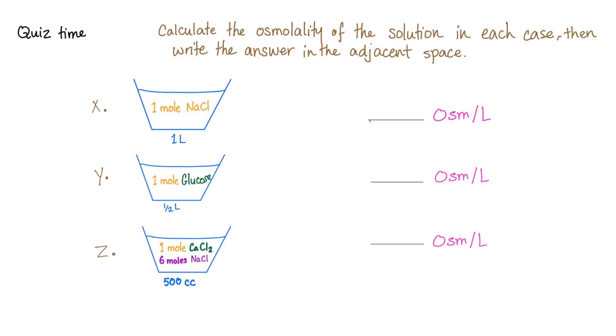The second question. Calculate the osmolality. It should be osmolarity, but clinically, we don't care. First one will be two osmols per liter, because one for sodium, one for chloride. This is just one for glucose because it's not ionizable, but it's half a liter, so you multiply by two. And the last one is complicated. The answer is 30. Please watch my previous video to learn how to do it.